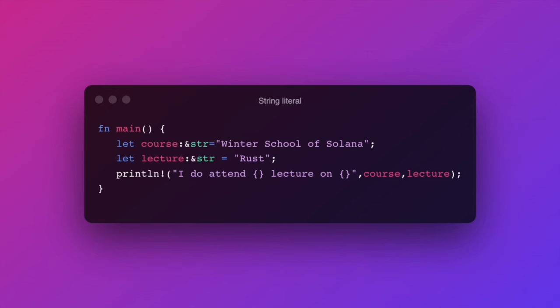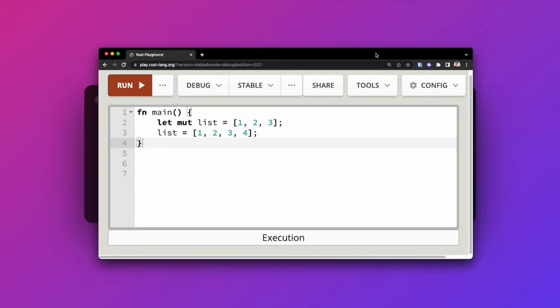Strings in Rust aren't as simple as strings in JavaScript. In JavaScript, strings are essentially arrays of characters — they are mutable and ever-growing. We are used to pushing to a string or array in JavaScript, mutating its length, and it works fine, because strings in JavaScript are heap-allocated and don't have a fixed length. This is a little bit different in Rust. If we take an example where we create a mutable list with the length of three and then try to reassign it to a list with a different length, it will fail.